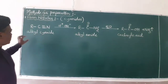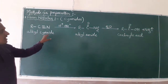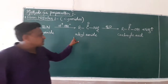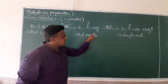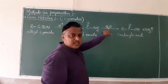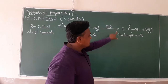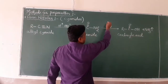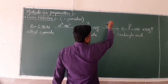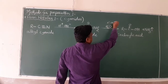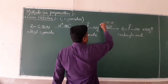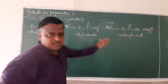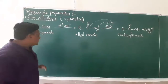I repeat: when alkyl cyanide undergoes acid hydrolysis, it forms an amide, and further hydrolysis of the amide forms the carboxylic acid. Here H⁺ and OH⁻ are involved — H combines here, and OH combines here to form the compound.